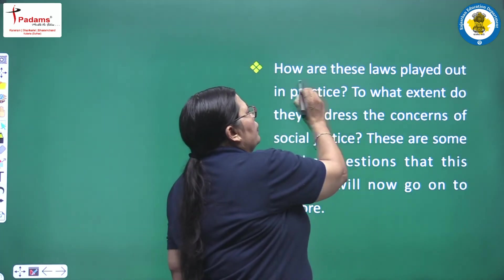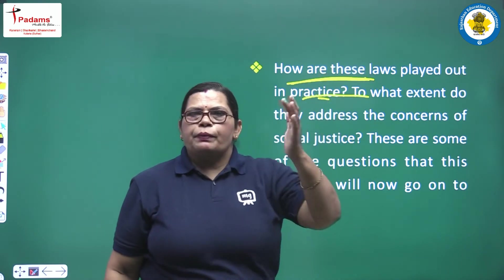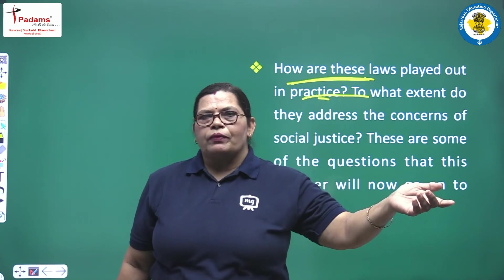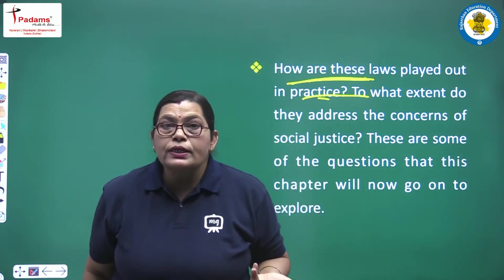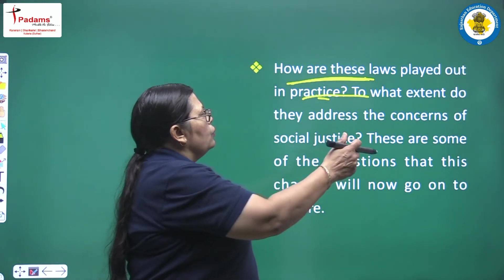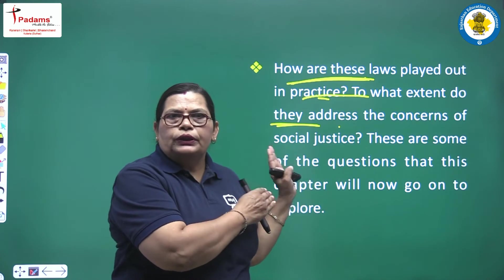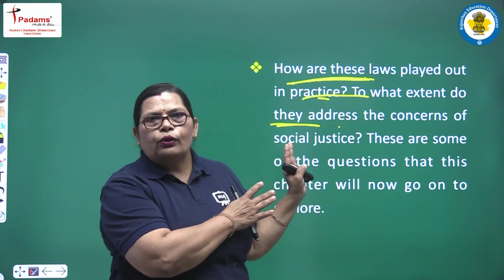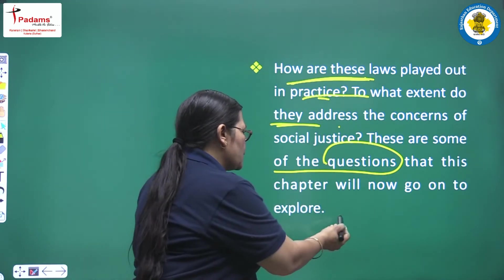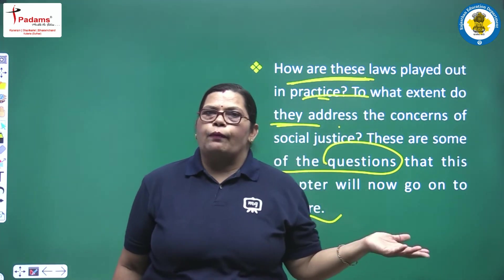Next: how are these laws played out in practice? In reality, even now we still see small children working in hotels and tea stalls — so is that not exploitation of them? To what extent do these laws address the concerns of social justice? These are some of the questions that this chapter will now go on to explore.